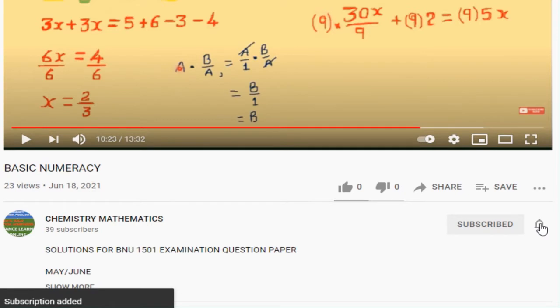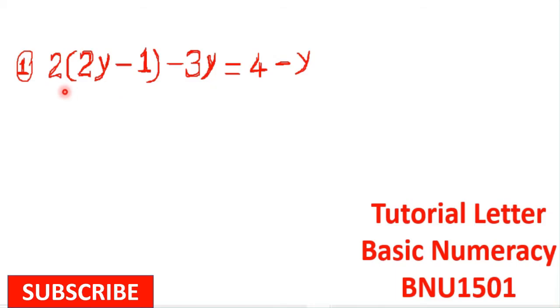First, we remove these brackets by multiplying this 2 with 2y, which will give us 4y, and also multiplying this 2 with -1, which will give us -2. After that, we copy the rest, which is -3y equals to 4 - y.